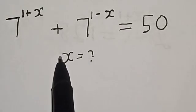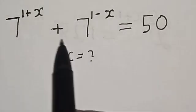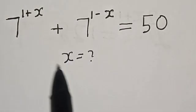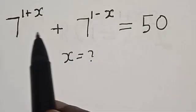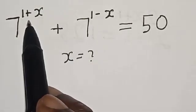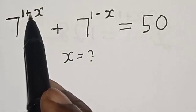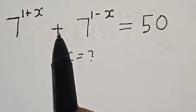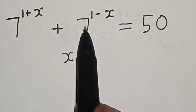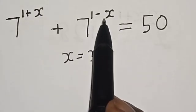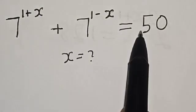Hi everyone, welcome to my class. In this class, we want to find the value of s from this given equation: 7 raised to the power 1 plus s, plus 7 raised to the power 1 minus s, is equal to 50.